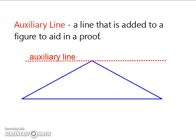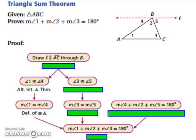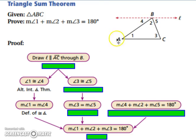A vocabulary term: an auxiliary line is a line that is added to a figure to aid in a proof. We're going to need this when trying to prove the triangle sum theorem. So we're handed a triangle, and we want to prove that the angles add up to 180 degrees. To do this, we draw in our auxiliary line, using the fact that we can draw a line parallel to AC through a point — that's the parallel postulate.